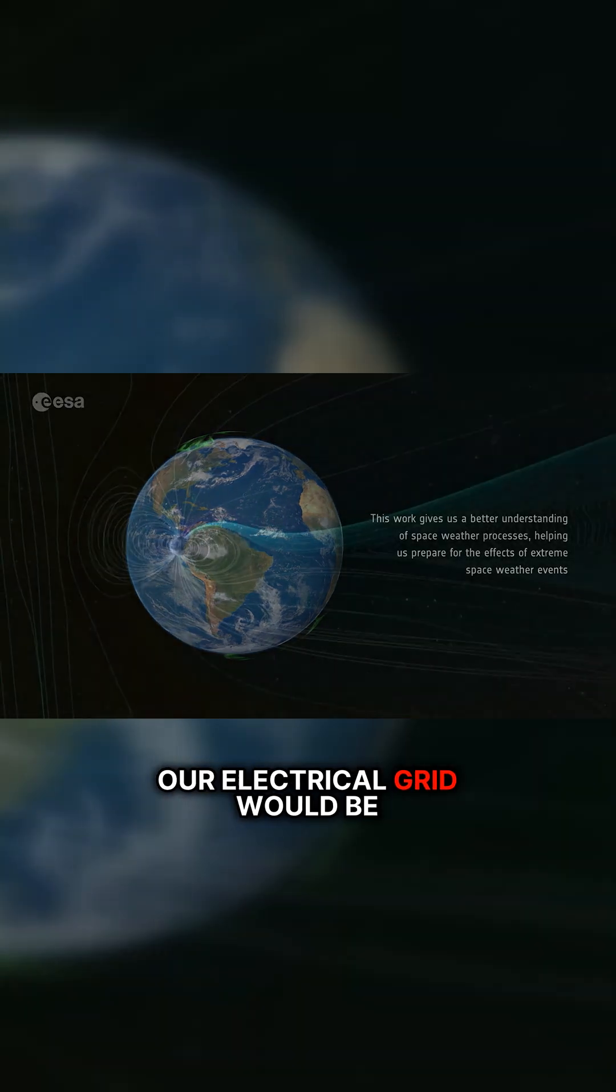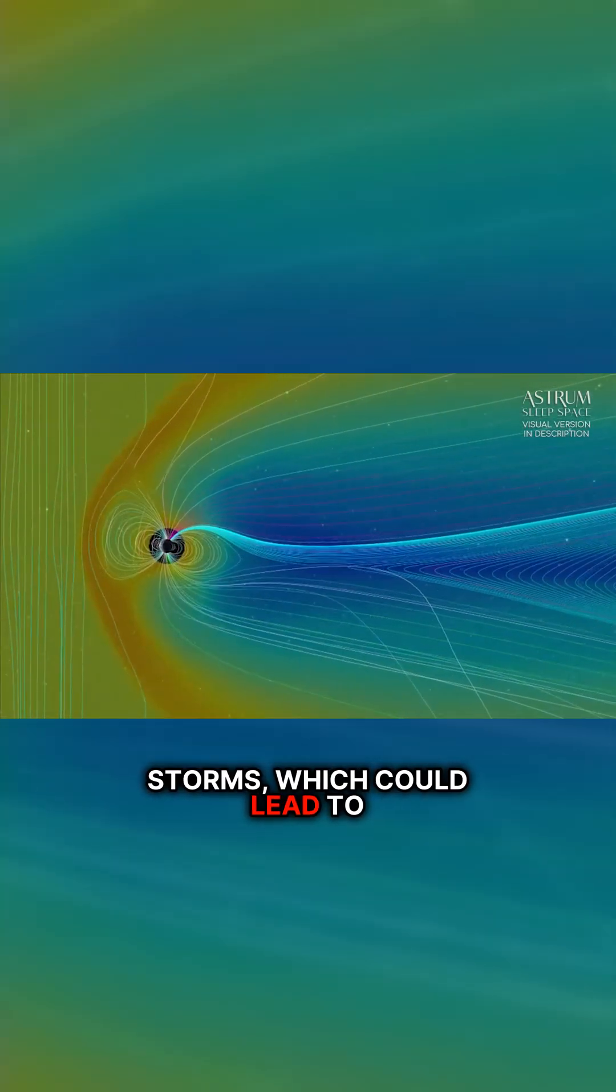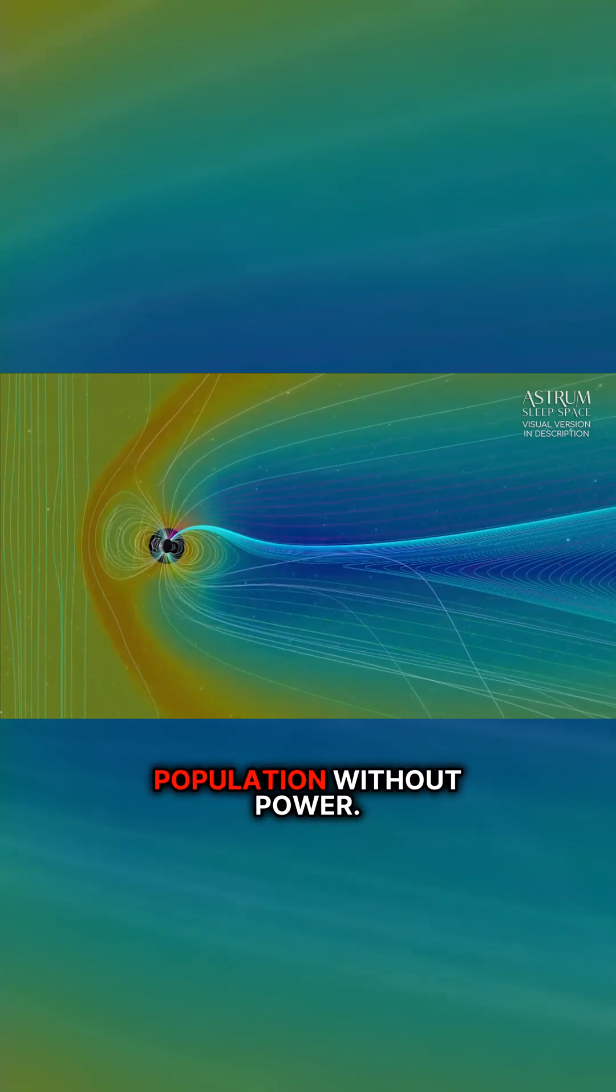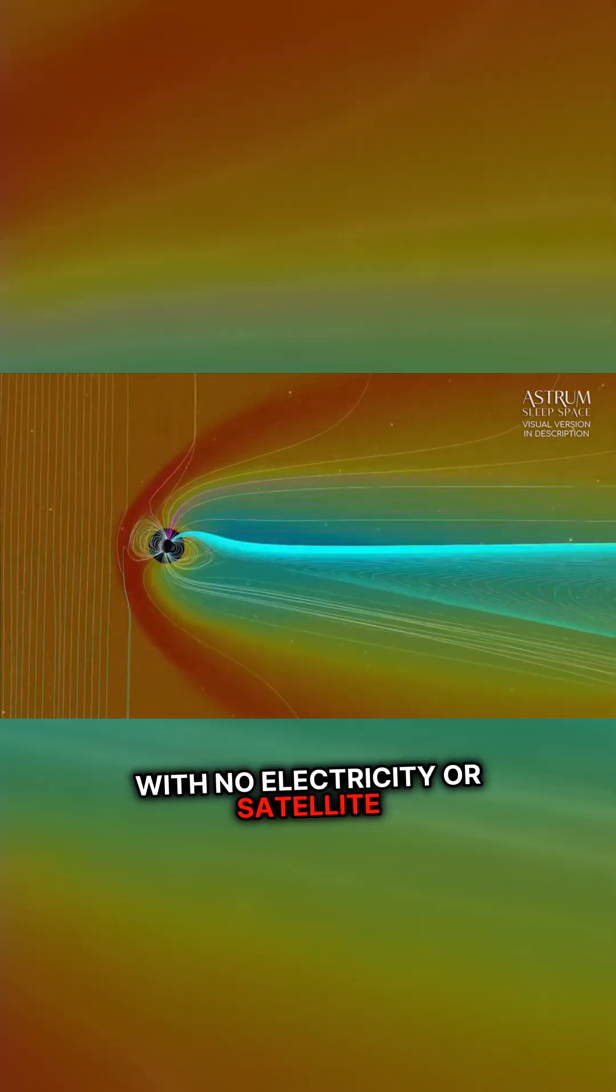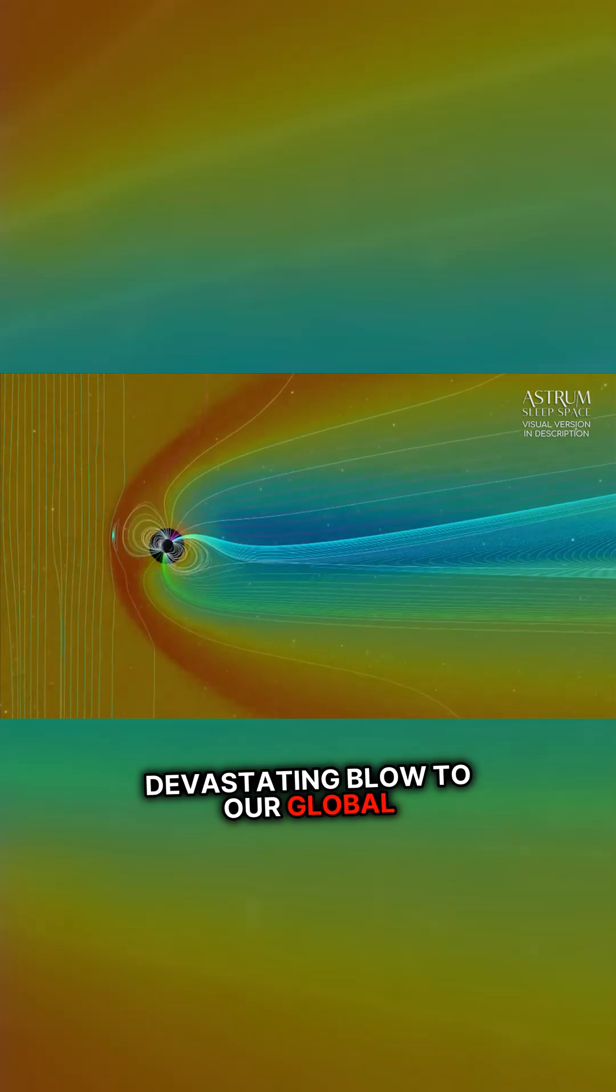Our electrical grid would be much more vulnerable to solar storms, which could lead to large segments of the Earth's population without power. With no electricity or satellite communication, it would be a devastating blow to our global civilization.